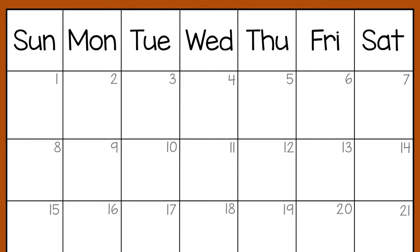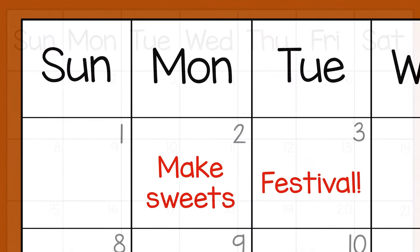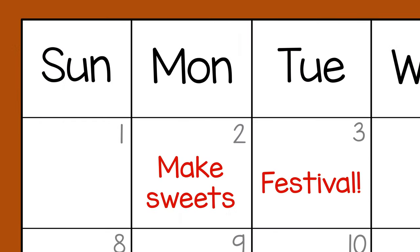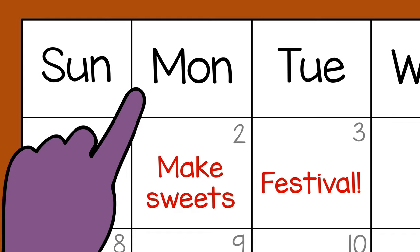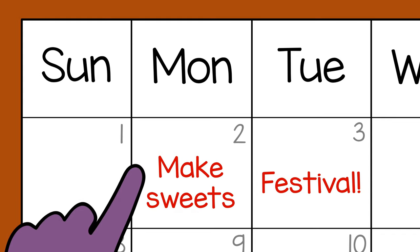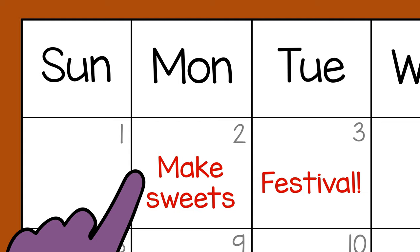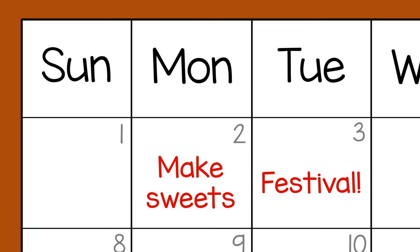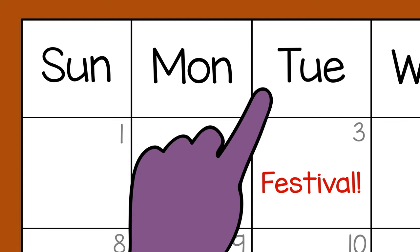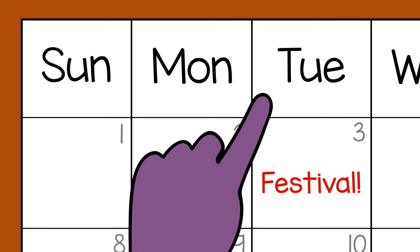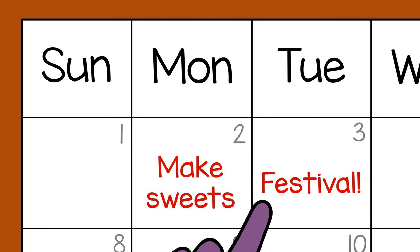Each day you can use the calendar to talk about what day it is and what day it will be tomorrow. For example, you might point at Monday and say, today is Monday. We are making some sweets today. Then you could point at Tuesday and say, tomorrow will be Tuesday. We are going to the festival on Tuesday.